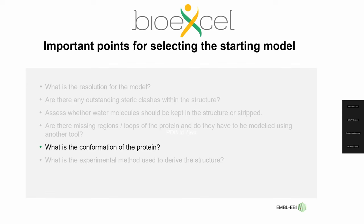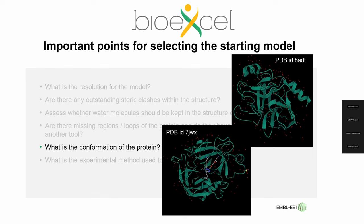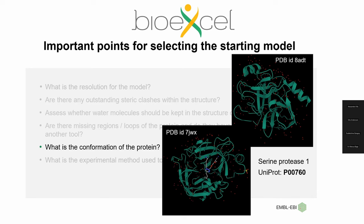The next point is the conformation of the protein — for example, the apo versus the holo form. Two proteins can have the same UniProt ID, but one has a ligand bound to it, leading to significant structural differences. Depending on what you are looking for, you should be aware of what form of the protein you are using as an initial model to start your simulation, particularly if you want to study a ligand binding site.